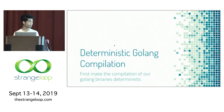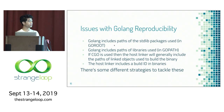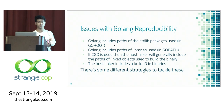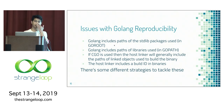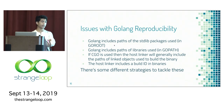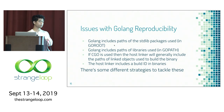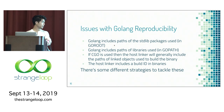The first thing is building deterministic Go binaries. There are some issues with Go right now: Go includes paths of standard library packages used in GOROOT, paths of libraries using GOPATH, and if you use cgo for importing C dependencies, the host linker includes paths of linked objects into the binary. It also includes an arbitrary build ID in these binaries, which makes Go not deterministic even though it doesn't tend to be.